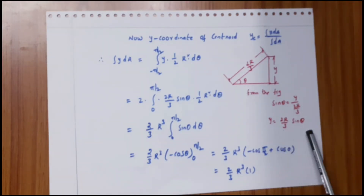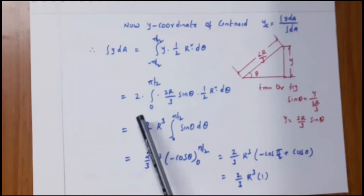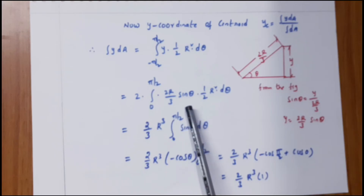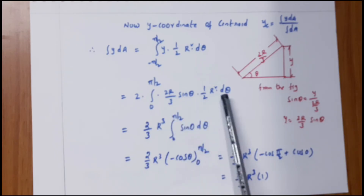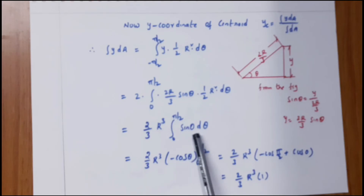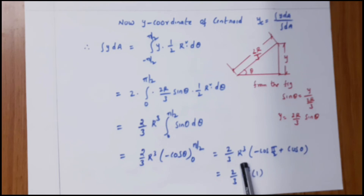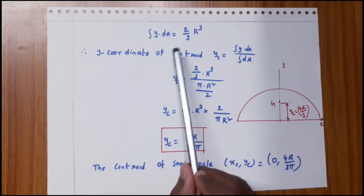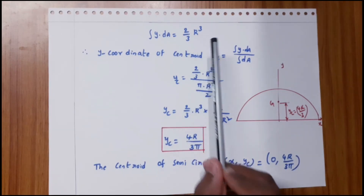From the figure, sin θ = y / (2r/3), so y = (2r/3)·sin θ. Therefore ∫y·dA = 2 × ∫₀^(π/2) (2r/3)·sin θ · (1/2)r²·dθ = (2/3)r³ ∫₀^(π/2) sin θ·dθ = (2/3)r³ · [−cos θ]₀^(π/2) = (2/3)r³·(0 − (−1)) = (2/3)r³.